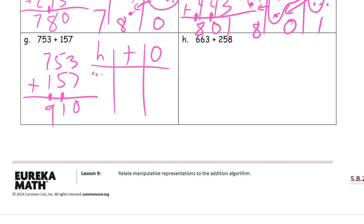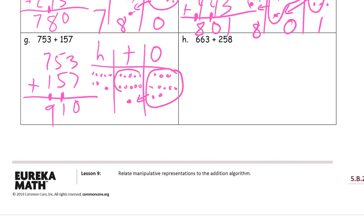Chip model for 753: seven hundreds, five tens, three ones. And the hundred fifty-seven is one more hundred, five tens, and seven ones. There's ten ones here — and I already had ten tens. Count all my hundreds: nine hundreds. One ten and zero ones.